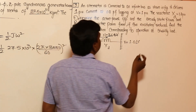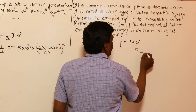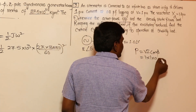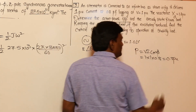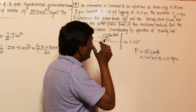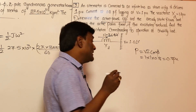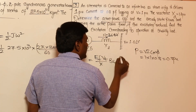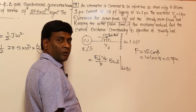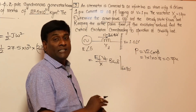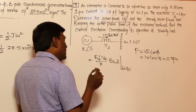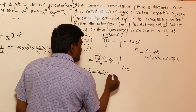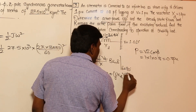First, active power output P = V×I×cos(φ) = 1×1×0.8 = 0.8 per unit. Next, steady state power limit = E_F×V_T / X at δ = 90°, which equals E_F×V_T / X. So we need to calculate E_F. Using E_F∠δ = V_T∠0 + j×X_S × I_A∠φ, this gives 1∠0 + j×1.2 × 1∠(−36.87°).